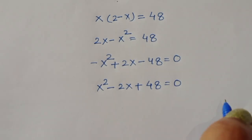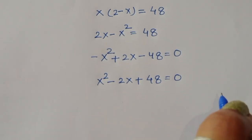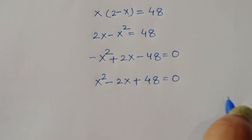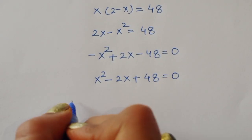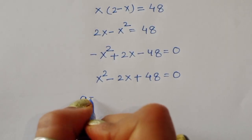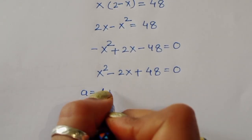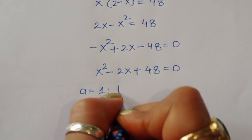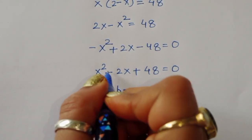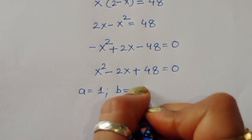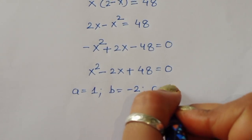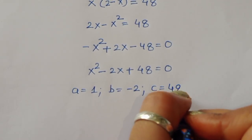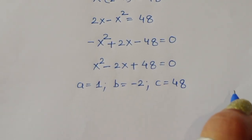We now have the quadratic equation x squared minus 2x plus 48 equal to 0. The coefficients are: a equal to 1, b equal to minus 2, and c equal to 48.